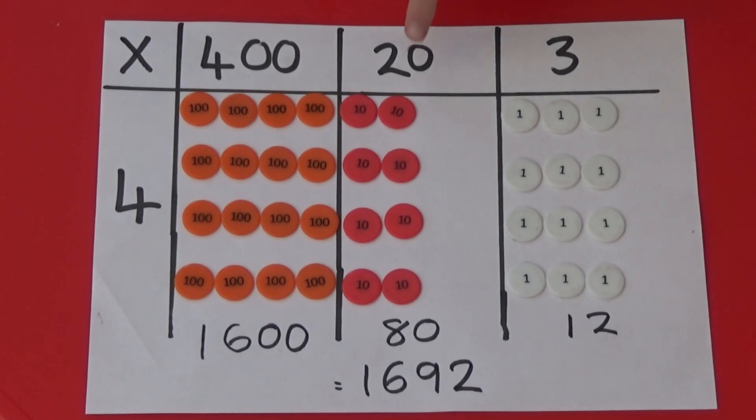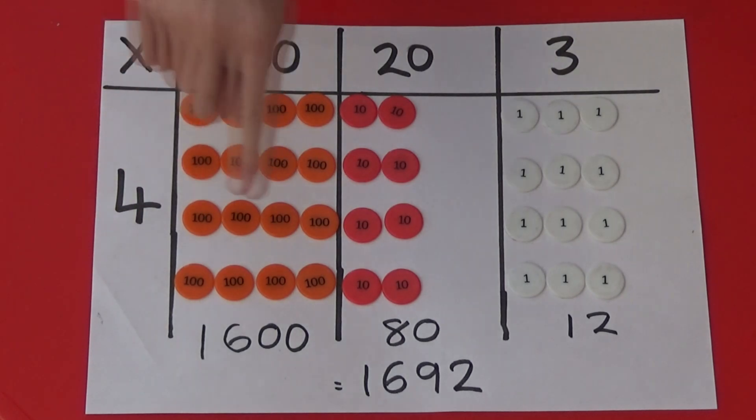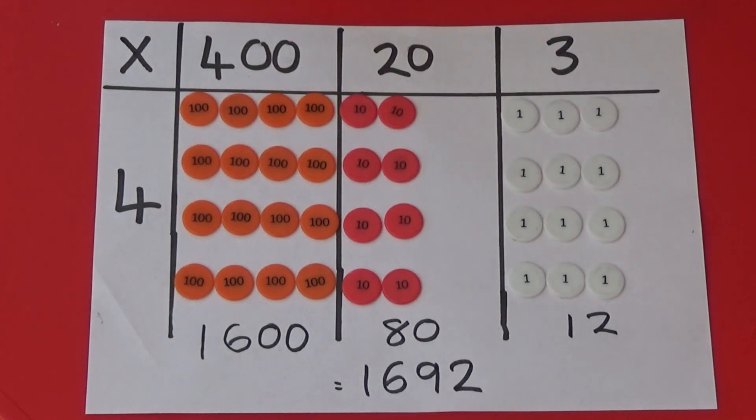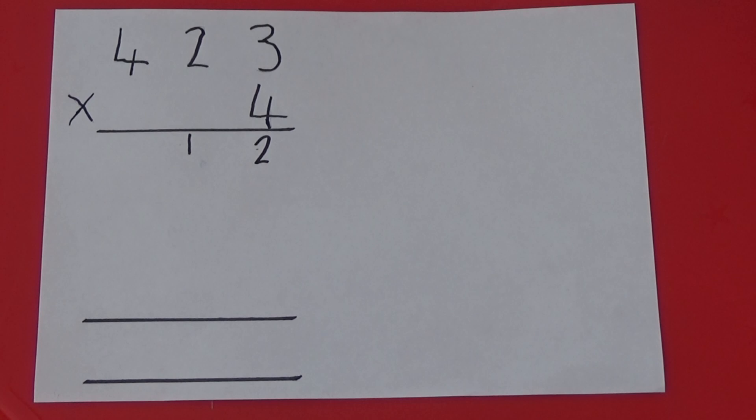Next, if we look at 20 multiplied by 4, it equals 80. On the column method, we can see we are working at 20 multiplied by 4. So I'm going to write 80 underneath the 12.